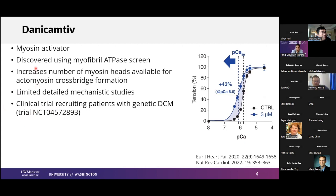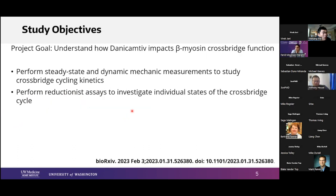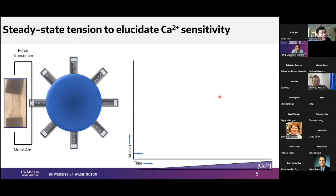What I'm going to share today is unpublished work currently under review and on BioArchive. About 90% of what I'm showing is in the BioArchive paper; some data are in response to reviewers and not in the original posting. We wanted to look at how Danicamptiv impacts beta-myosin heavy chain's function using steady state and dynamic mechanical measurements, and reduction-in-assay approaches to investigate individual states of the cross-bridge cycle.